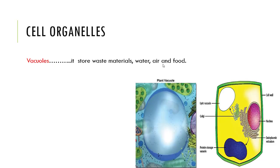The next one: vacuoles. They store waste materials, water, air, and food particles. In plant cells, a single large vacuole is present, but in animal cells, many small vacuoles are present, as you can see in this diagram.